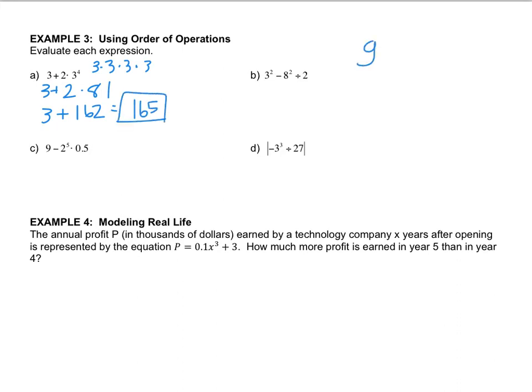Order of operations says you do grouping symbols first. Then you do exponents. Then you do multiplication and division in order from left to right. And then you do addition and subtraction in order from left to right.